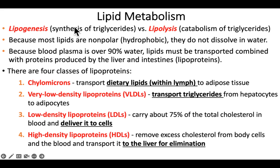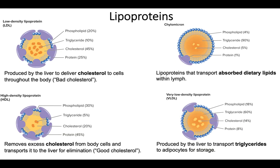Lipids are nonpolar and hydrophobic. In order to move these lipids around in the body, we need to form lipoproteins — a topic we just finished covering in the previous chapter. We learned about lipoproteins: chylomicrons being the ones that are in your lymph, and then VLDL, LDL, and HDL. This slide was in the previous chapter on the digestive system, so you should already know lipoproteins, as they are very involved in the overall concept of lipid metabolism and how we move lipids around in the body.